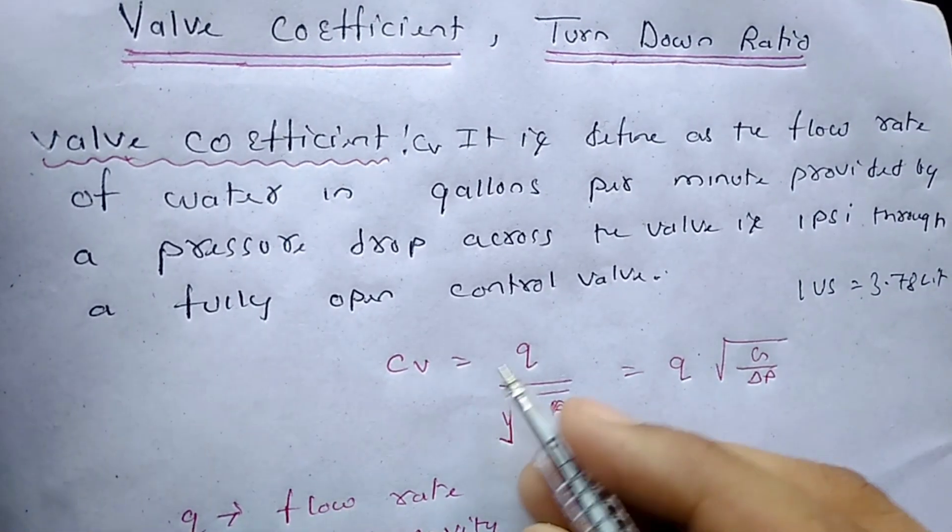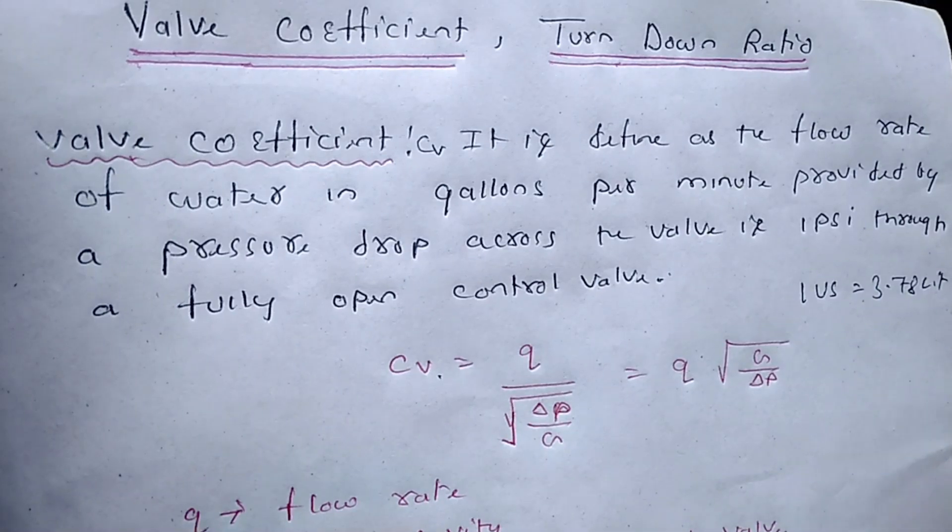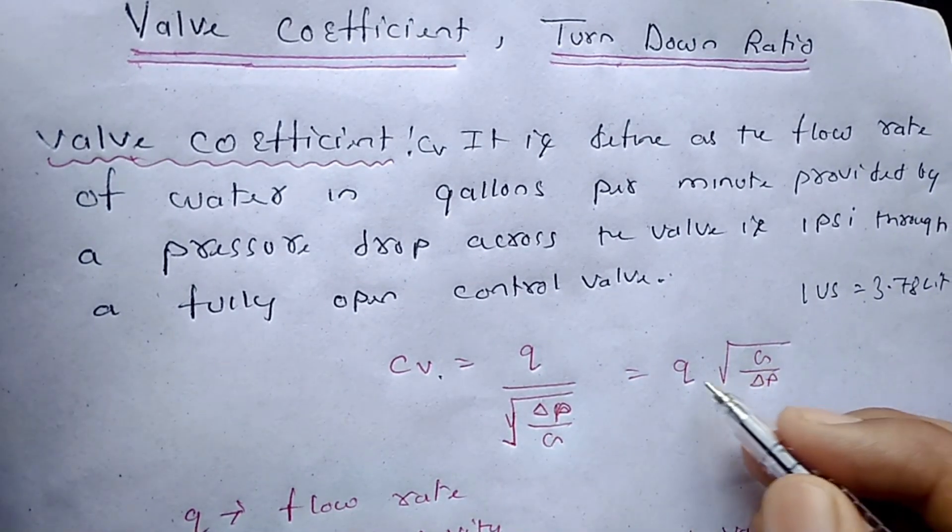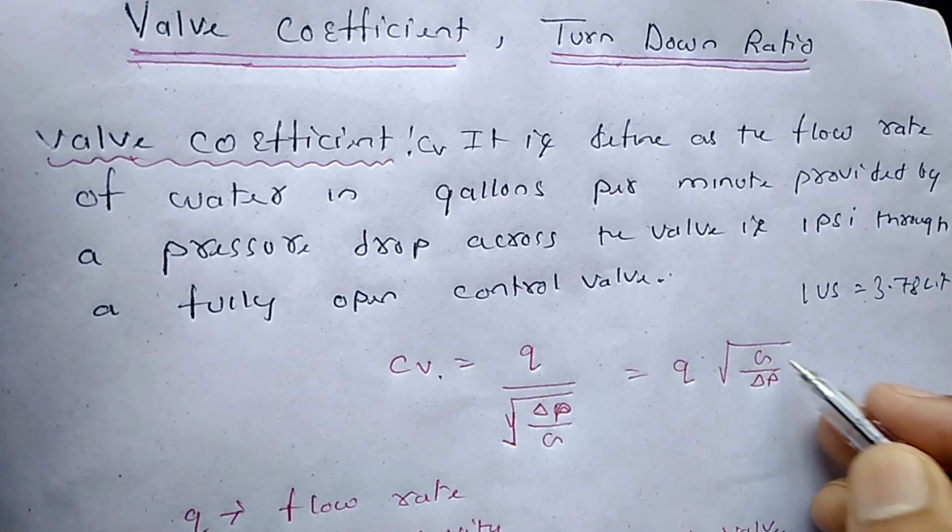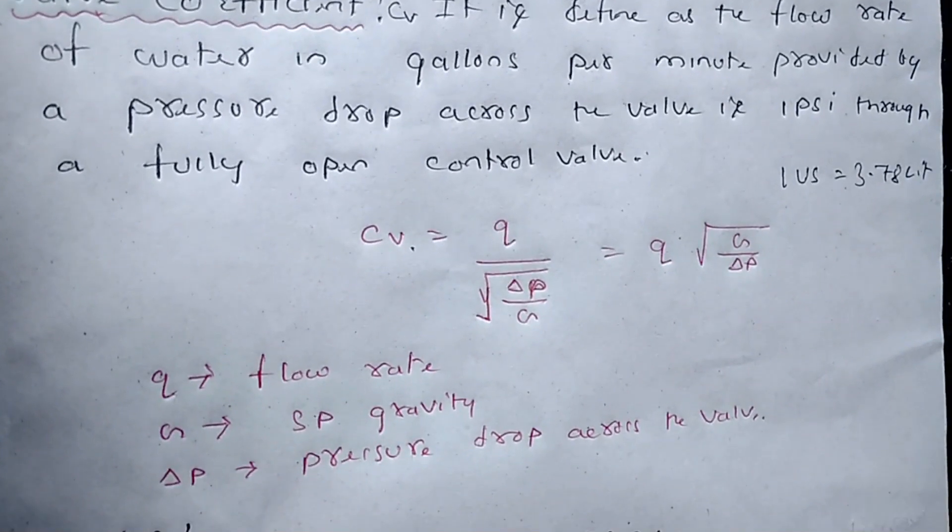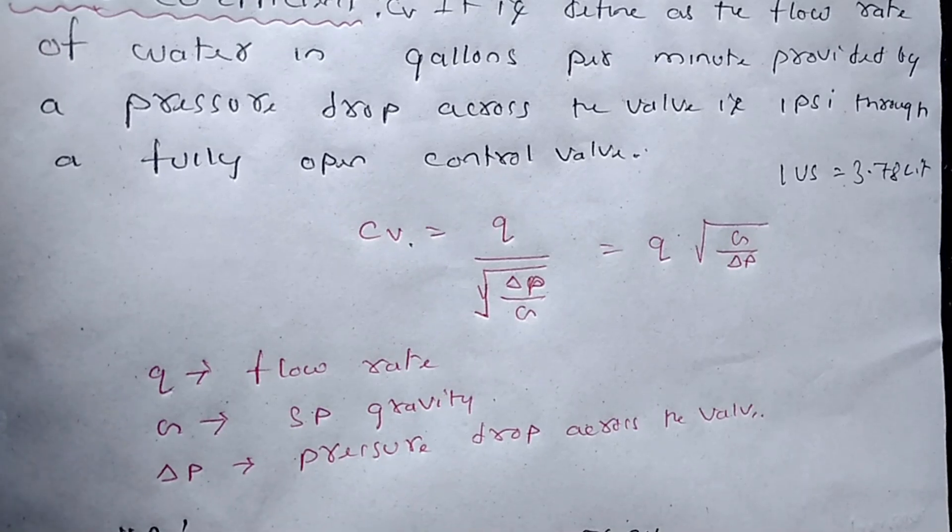So this is the definition and this is the equation of control valve: CV equals Q by root over delta P over G, and Q equals CV times root delta P over G. What is Q? Q is the flow rate. G is specific gravity. Specific gravity of water is 1. Delta P is pressure drop across the valve.